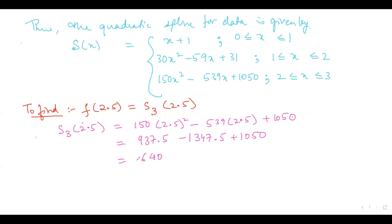This is how you find the quadratic spline for given data. It's a bit lengthy, but just remember: if the condition that the second derivative of the spline at x-naught equals zero is not given, you can assume it. Thank you everyone, we'll meet in the next lecture.